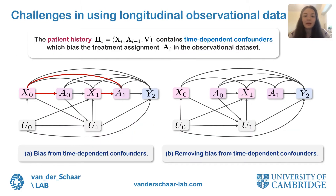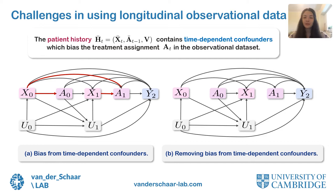Estimating counterfactual patient outcomes over time is challenging due to the presence of time-dependent confounders in observational data sets. Time-dependent confounders are patient covariates that affect the treatment assignments and are themselves affected by past treatments. For instance, imagine a patient is given treatment A1 when a certain covariate — say white blood cell count — has been outside of normal range values for a while, and white blood cell count itself is affected by a past administration of treatment A0. Without adjusting for this time-dependent confounding bias, we could incorrectly conclude that treatment A1 is harmful to the patient.